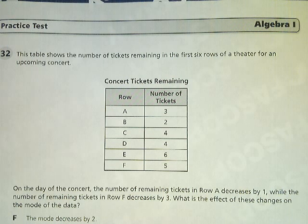Tennessee, and of course, Algebra 1, practice test, question number 32. The table shows the number of tickets remaining in the first six rows of a theater for an upcoming concert.